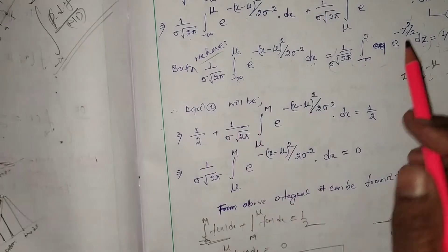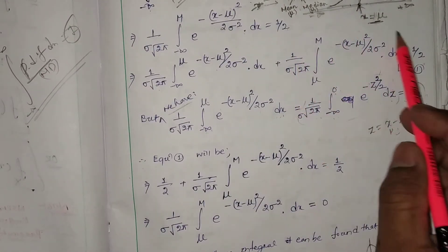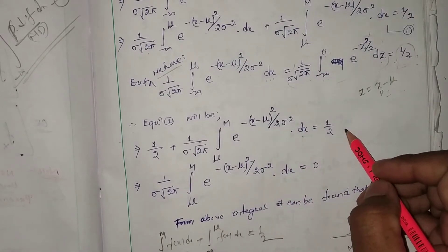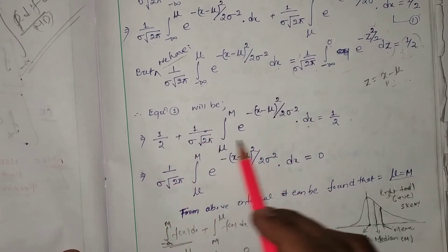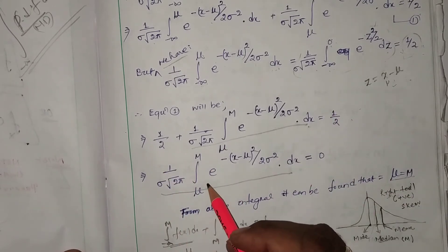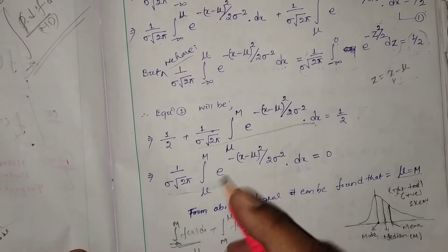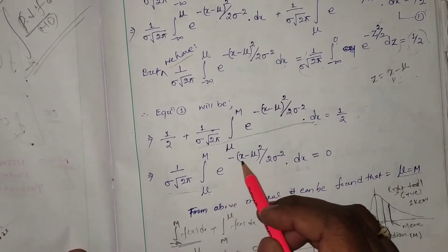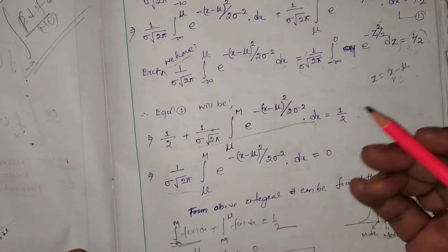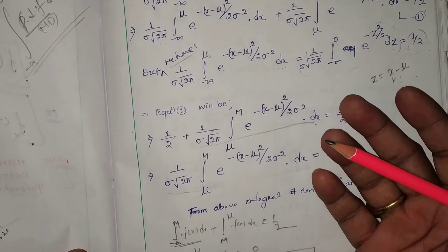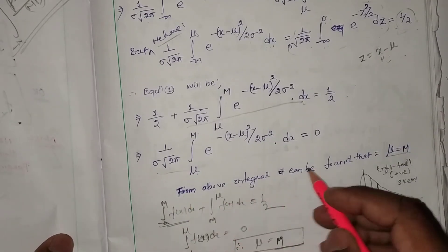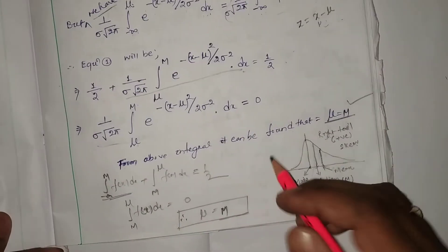Substituting back into equation (1): 1/2 + (1/σ√(2π))·∫_{μ}^{m} e^(−(x−μ)²/(2σ²))dx = 1/2. This implies the second integral equals 0. Since the integrand contains (x−μ)² — which is always positive — the integral from μ to m equals zero only if m = μ. Therefore, from the above, it is proved that median m equals mean μ.